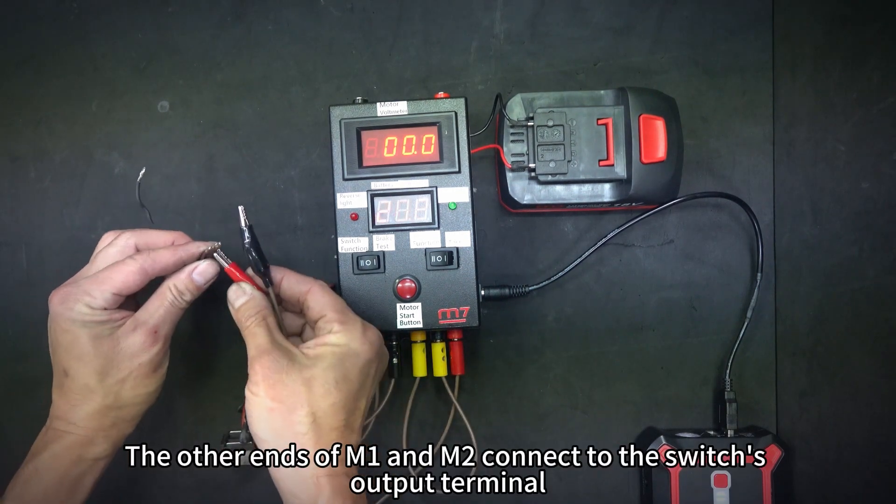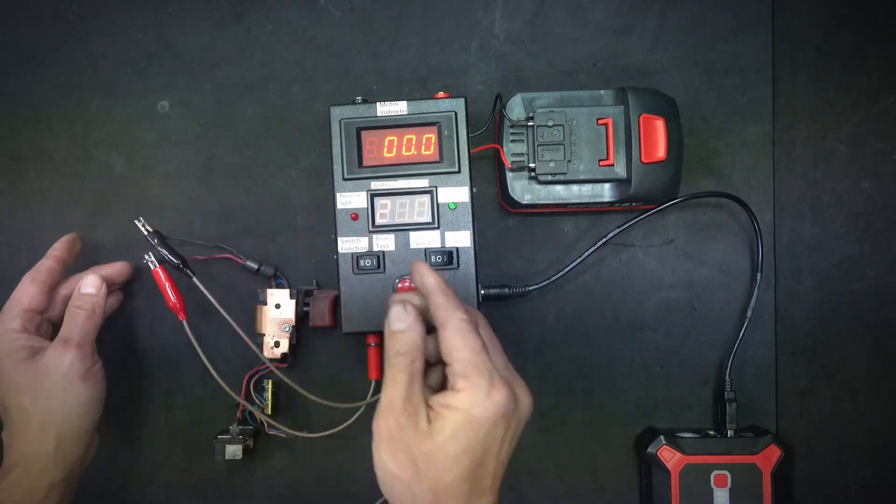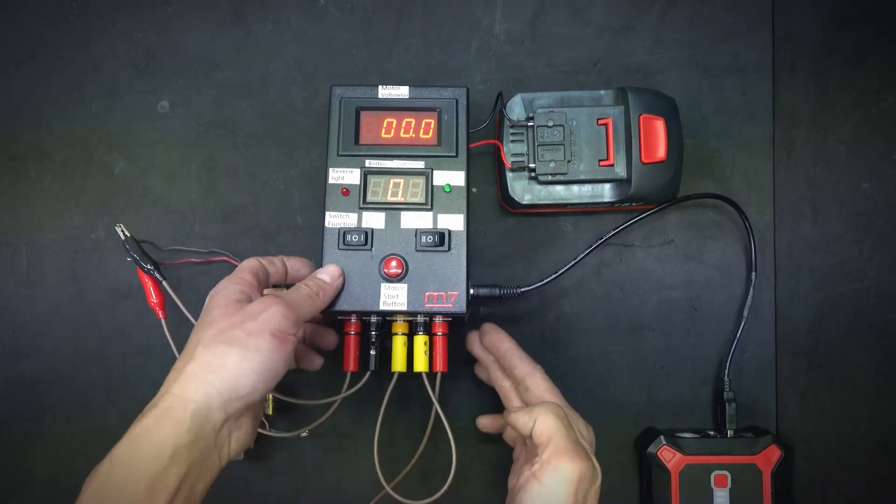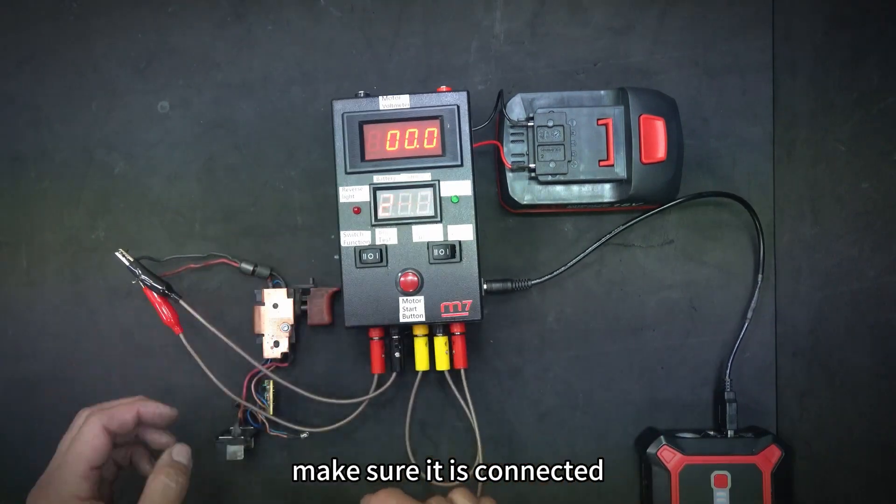The other ends of M1 and M2 connect to the switch's output terminal. The other end of B+ connects to the positive terminal of the input, make sure it is connected.